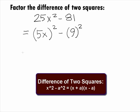We can then factor this as a product of the sum and difference of the bases of 5x and 9 and get our final answer of 5x plus 9 times 5x minus 9.